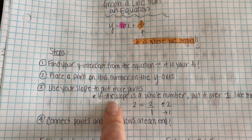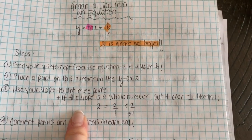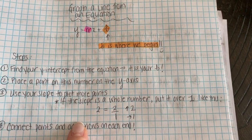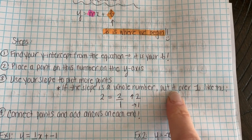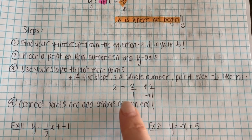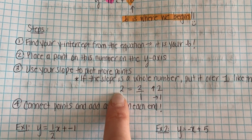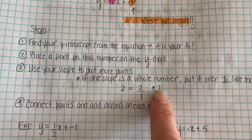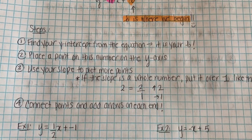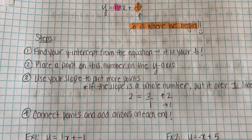The third step is to use your slope to plot more points from there. So you're just using rise over run like you've been doing. So if the slope is a whole number, to make it in the rise over run format, just put it over 1. So for example, if your slope is 2, you're going to just put it over 1, and that would be up 2 over 1. Finally, your last step is just to connect the points and add arrows on each end.